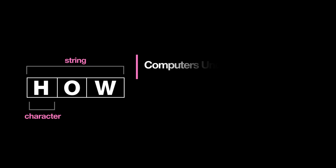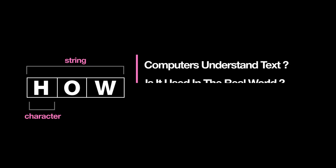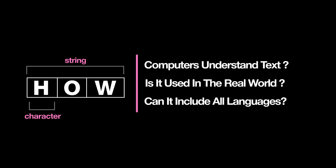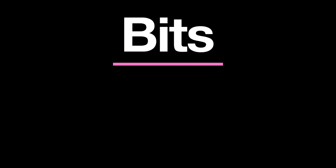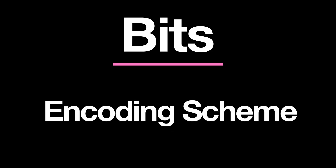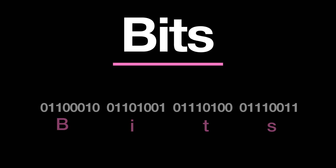So how do computers understand text? How is it used in action? And can it include all languages? A string is a data structure implemented by an array of characters. And going back to the basics, representing letters using bits requires what is called an encoding scheme, where each character is represented by a byte.